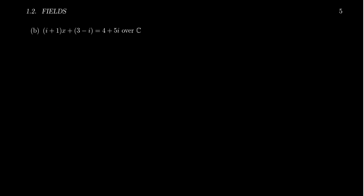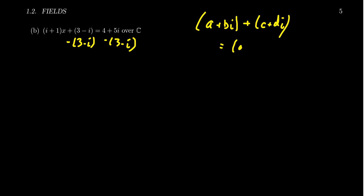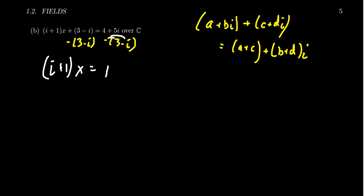Let's look at a linear equation over the field of complex numbers. The process of solving it is exactly the same, although the arithmetic of adding, subtracting, multiplying, and dividing complex numbers is more involved. To solve this linear equation — since complex numbers form a field — we subtract 3 minus i from both sides. When adding two complex numbers, (a plus bi) plus (c plus di), you add like terms: real parts a plus c and imaginary parts b plus d. Subtracting is similar. We get (i plus 1)X equals 4 minus 3 which is 1, and 5i plus i which is 6i, so (1 plus i)X equals 1 plus 6i.